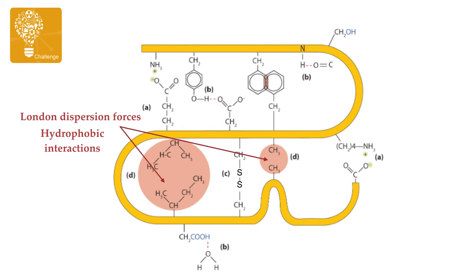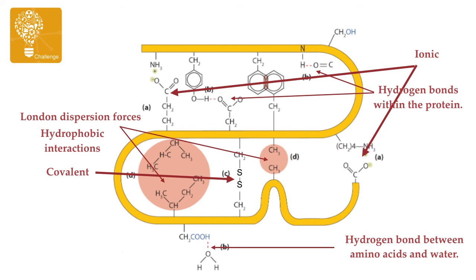There is also another phenomenon at work besides London dispersion forces, called hydrophobic interactions. Not only are the non-polar sections attracted to each other by weak London dispersion forces, but they're also repelled by the water that surrounds the cell. The non-polar sections of proteins are on the interior of the molecule, as far away from water as possible. London dispersion forces was the correct answer, but hydrophobic interactions also play a very important role in determining the molecular shape of proteins. Don't forget to complete your quiz for this lesson.